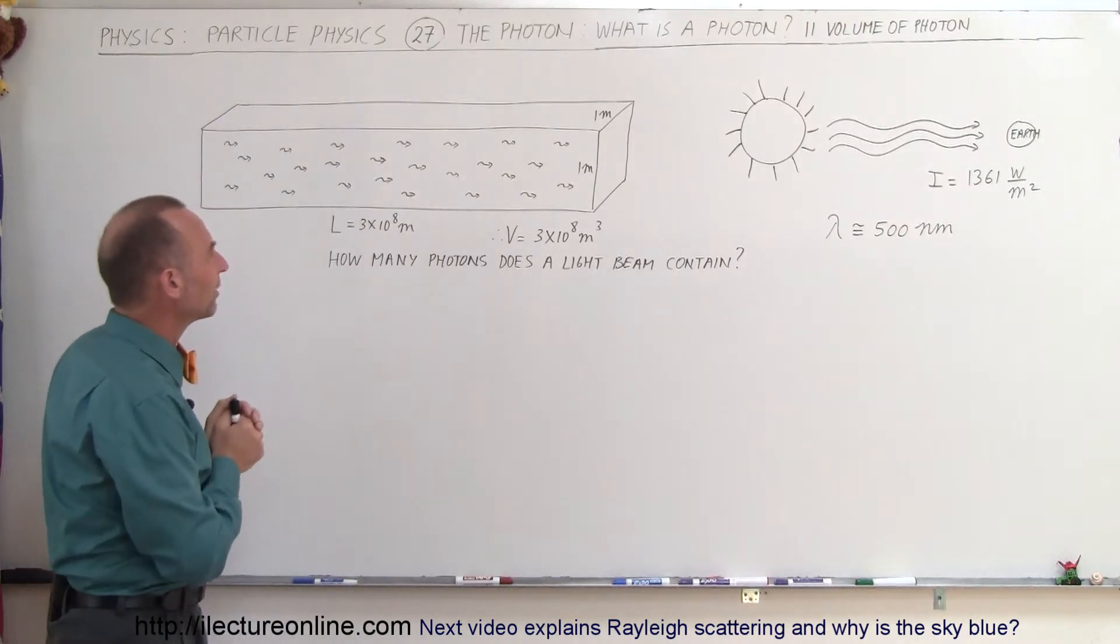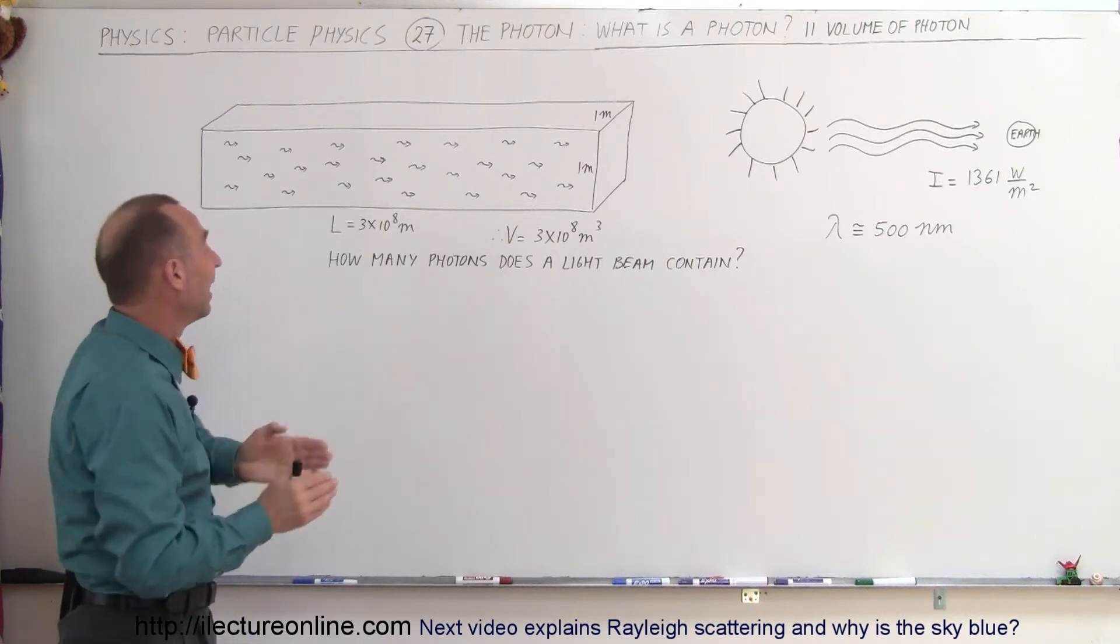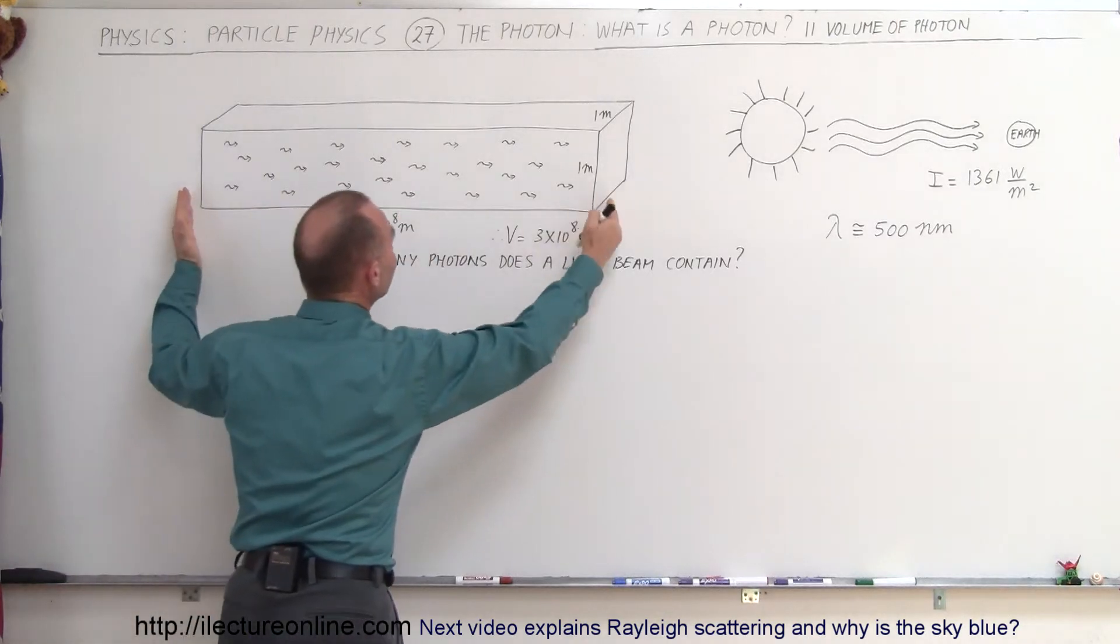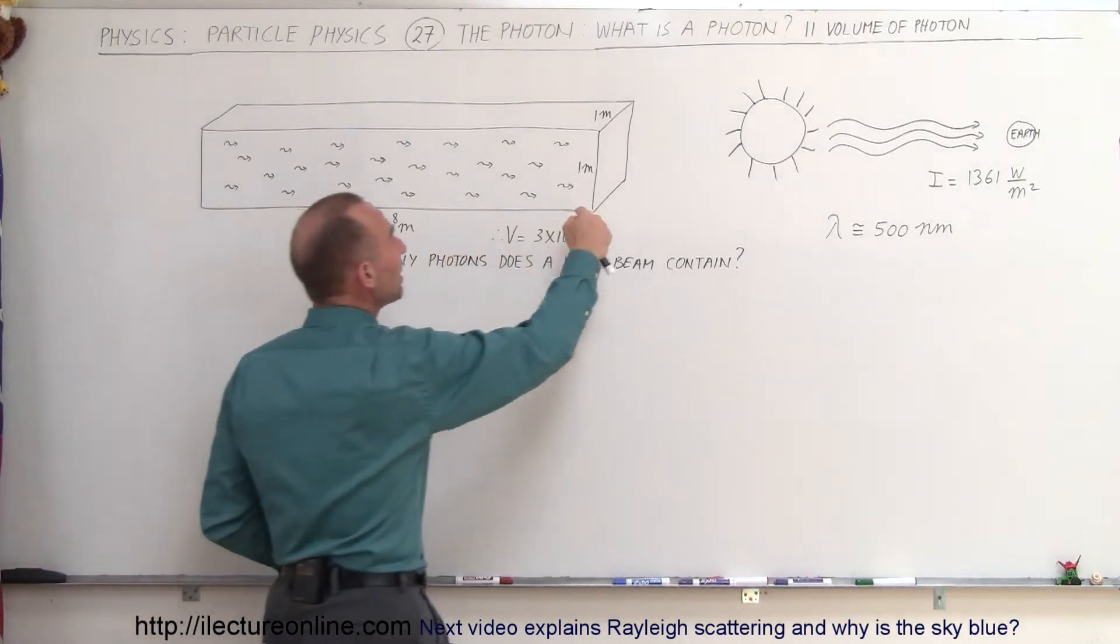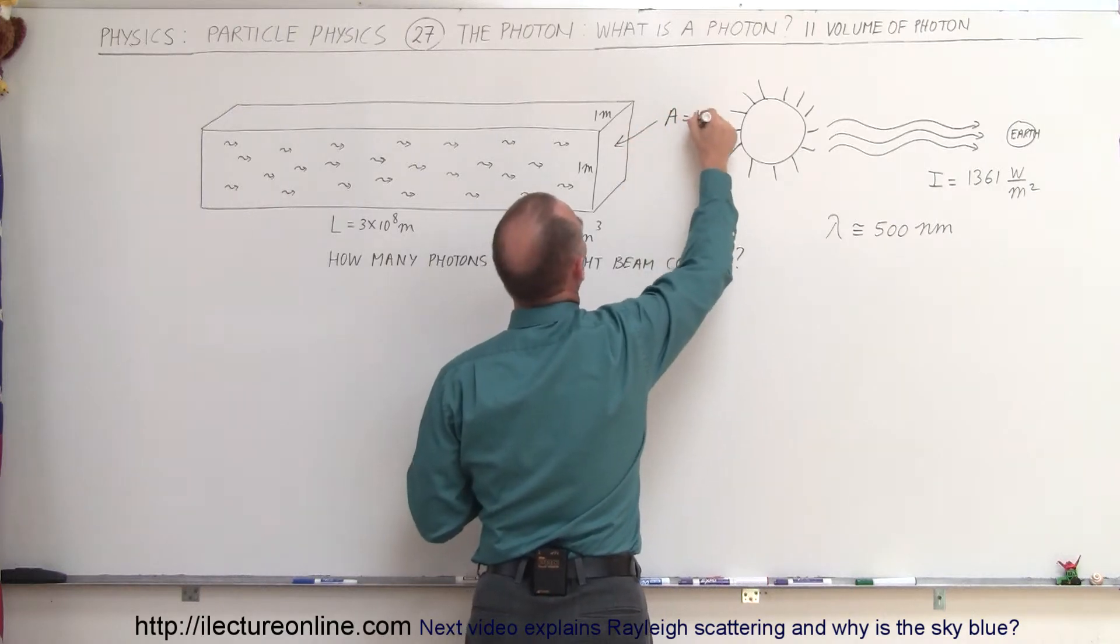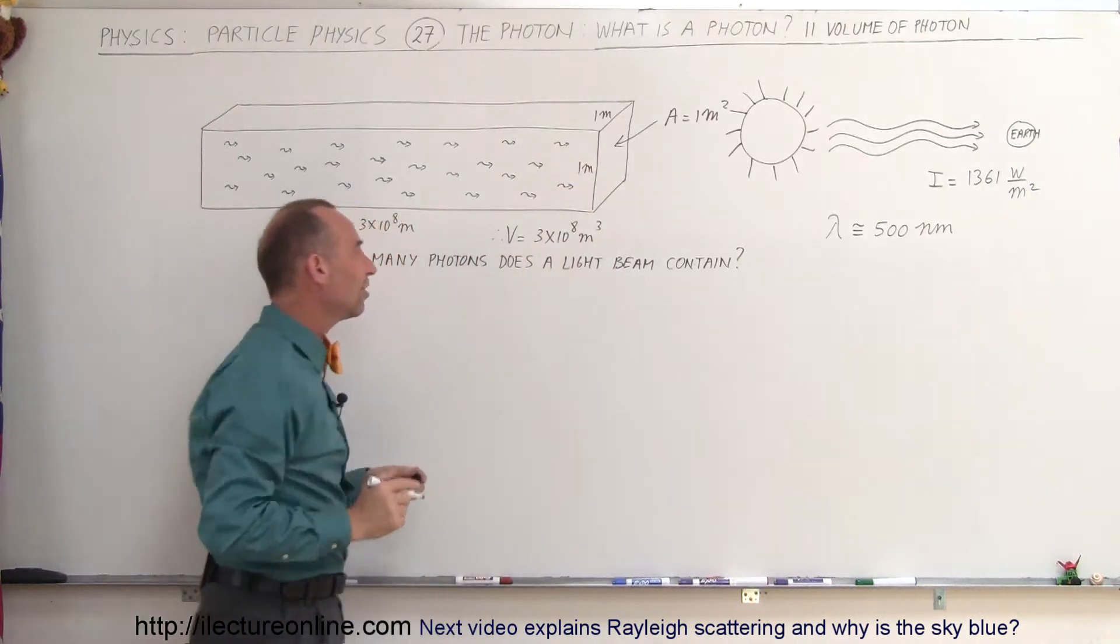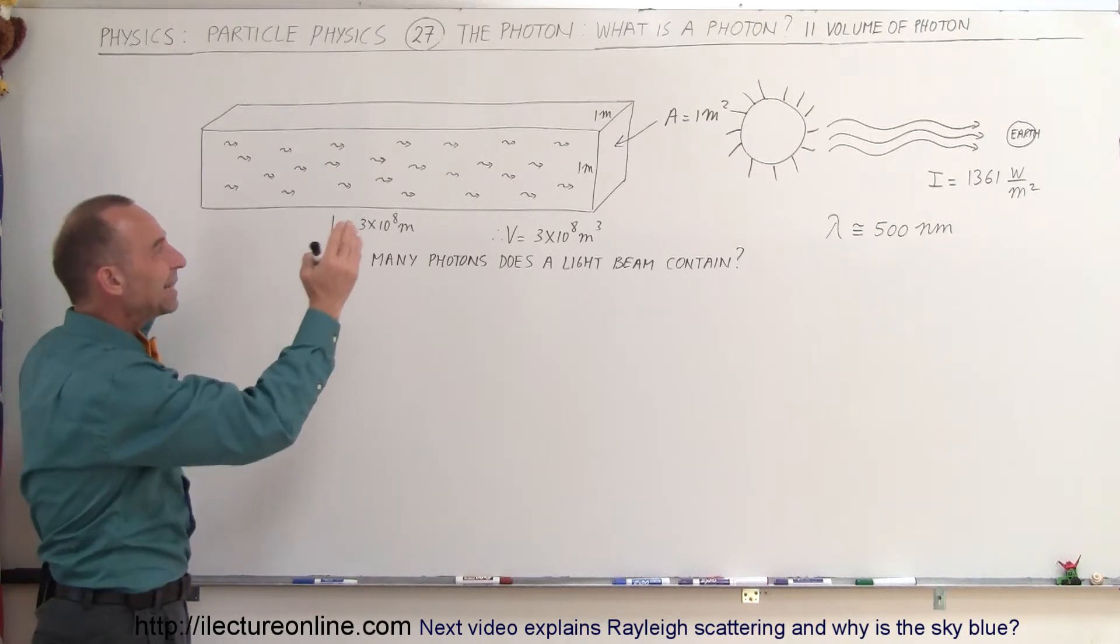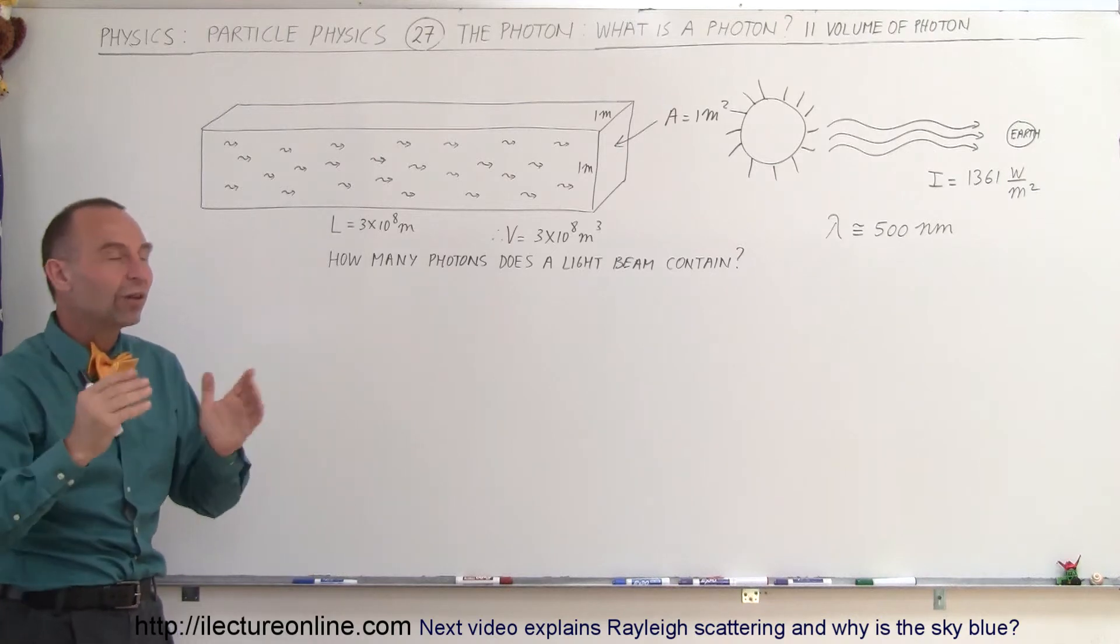So, let's imagine for a moment that light travels at 3 times 10 to the 8 meters per second. We know that of course. And so we know that in one second of sunlight, there will be a beam that is 3 times 10 to the 8 meters long, 300,000 kilometers long. And if we make the beam 1 square meter in cross-sectional area, so that means the area right here is equal to 1 meter squared, then we have a volume of beam that is equal to 3 times 10 to the 8 cubic meters. And then the question would be, how many photons would there be in that one beam? That would be one second worth of sunlight that will strike the earth on an area of 1 square meter.